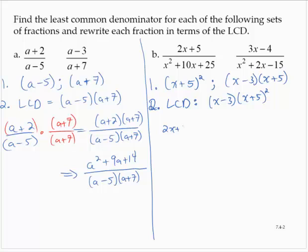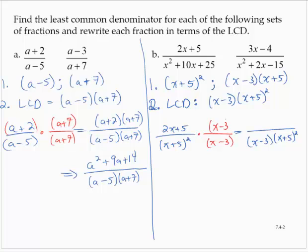For the first fraction, (2x + 5) over (x + 5)², I rewrite the denominator in its factored form. In the end, my denominator needs to be (x - 3)(x + 5)², so the denominator is missing a factor of (x - 3). Multiplying the numerator by that same factor gives (2x + 5)(x - 3), or 2x² - x - 15, over (x - 3)(x + 5)².